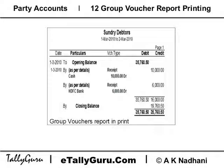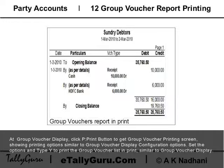For group voucher report printing, at the group voucher display, click the print button to get the group voucher printing screen, showing printing options similar to the group voucher display configuration options. Set the options and type Y to print the group voucher list.